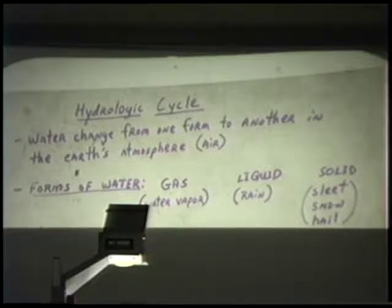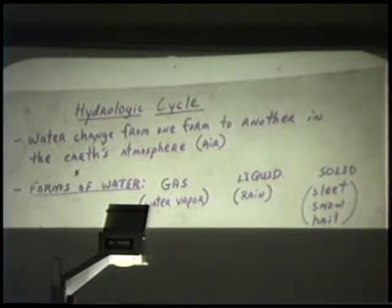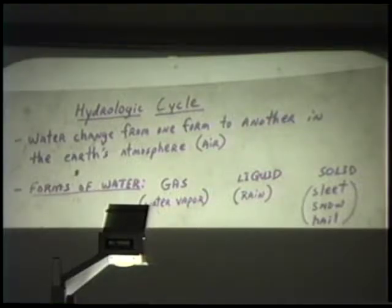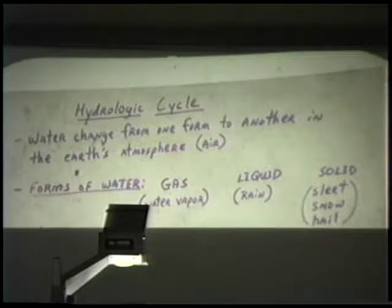These are the forms of water as they appear in the atmosphere. Water in the form of a gas in the atmosphere is referred to as water vapor. A gas is invisible for the most part, and water vapor is invisible. The atmosphere always has a certain amount of water vapor in it, even though we can't see it, and it is one of the most important mechanisms by which we get precipitation. Water in the form of a liquid in the atmosphere is referred to as rain, and water in the form of a solid is referred to as sleet, snow, and hail.